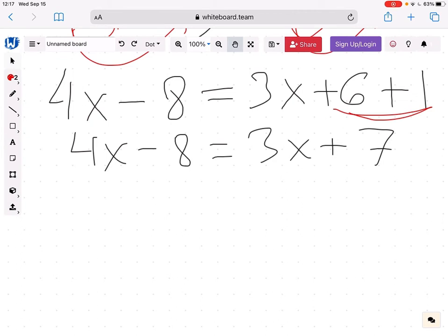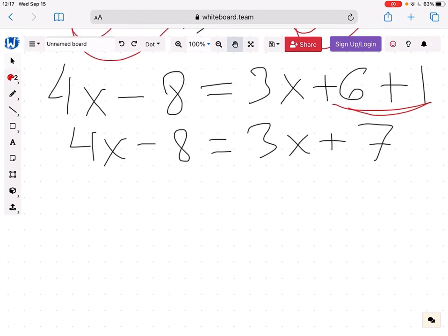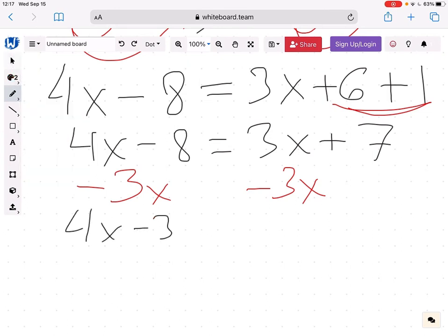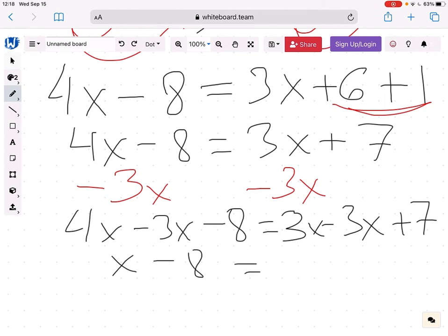We have 3x on the right, we want to get rid of it, so we want to subtract them. We subtract 3x here. Now we have to do the same on the left. Once we do this, we get 4x minus 3x minus 8 equals 3x minus 3x plus 7. Now on the left, 4x minus 3x gives us just 1x minus 8 equals 3x minus 3x is 0, so we have 7.